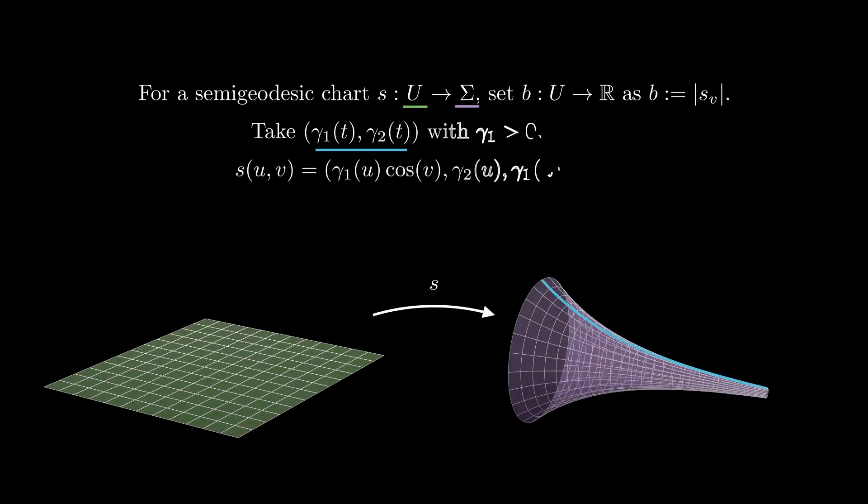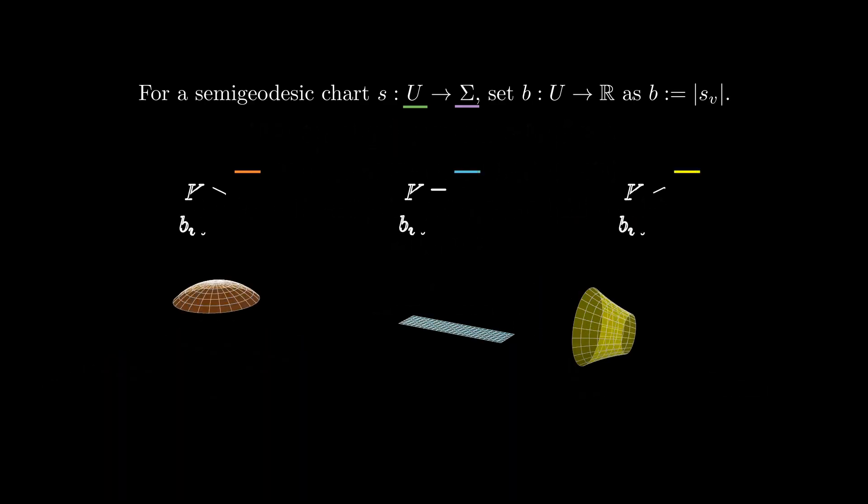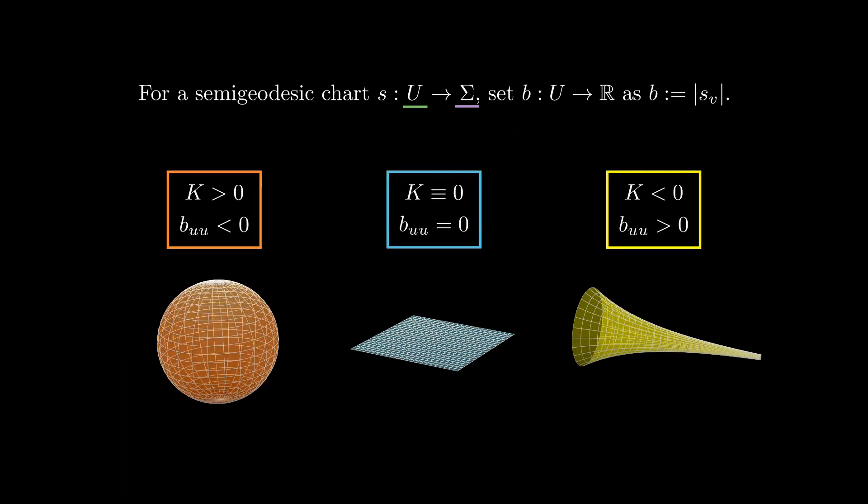When we consider a surface of revolution, whose generatrix is a graph of a positive convex function, the standard parametrization is a semi-geodesic chart, and the function B coincides with the distance from the axis of rotation. In this case, the function B is convex with respect to U. So in the three simple examples we have analyzed, the function BUU is negative in the presence of positive curvature and positive in the presence of negative curvature.